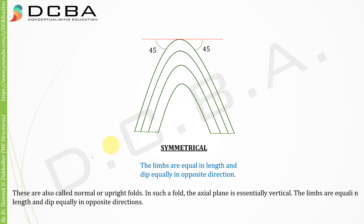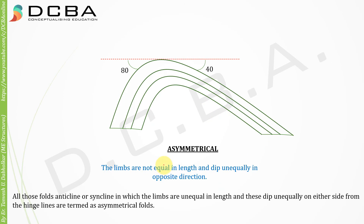The first type is the symmetrical fold, in which the limbs are of equal length and they dip equally in opposite directions, at almost 45 degrees. The second type is the asymmetrical fold, in which the limbs are not equal in length and dip unequally in opposite directions — all folds in which limbs are unequal in length and dip unequally on either side from the hinge line are termed asymmetrical folds.